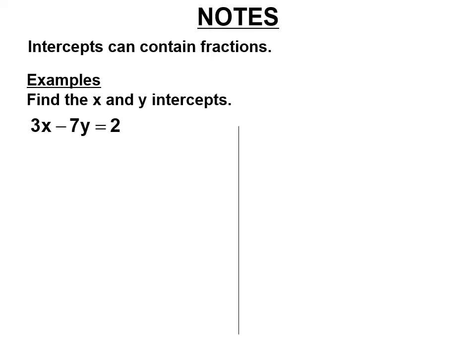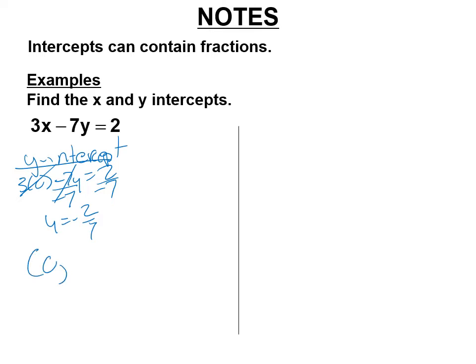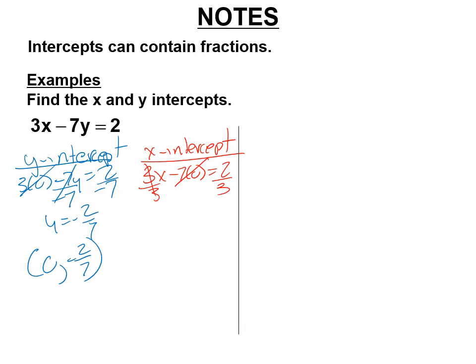We'll just make sure that when we get fractions, we can handle that. For the y-intercept, you make x equal to 0. That goes away. Negative 7y equals 2. Divide by negative 7. y equals negative 2 sevenths. So the y-intercept is 0, negative 2 sevenths — yes, that's possible. For the x-intercept, you make y equal to 0. 3x equals 2. Divide both sides by 3. x equals 2 thirds. So the x-intercept is 2 thirds, 0.